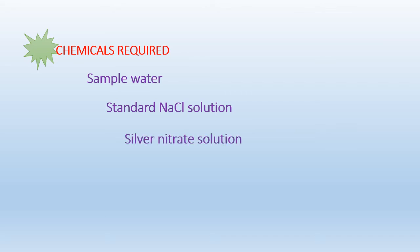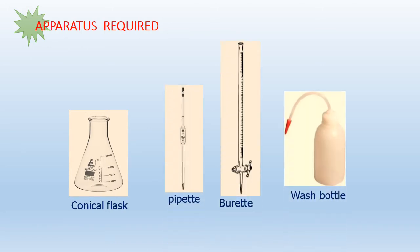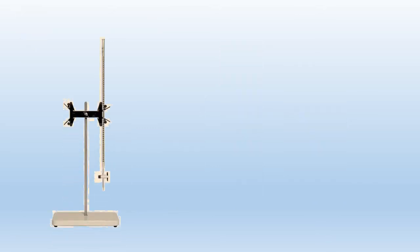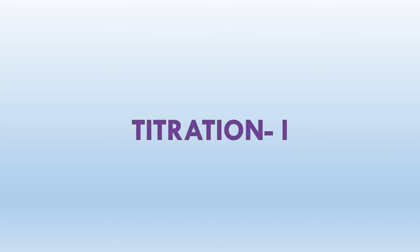Chemicals required: sample water, standard NaCl solution, silver nitrate solution, and 1% potassium chromate indicator. Apparatus required: conical flask, pipette, burette, and wash bottle. Now fill up the burette with AgNO₃ solution, fill the nozzle and adjust to the 0 mark. Let us do Titration 1.